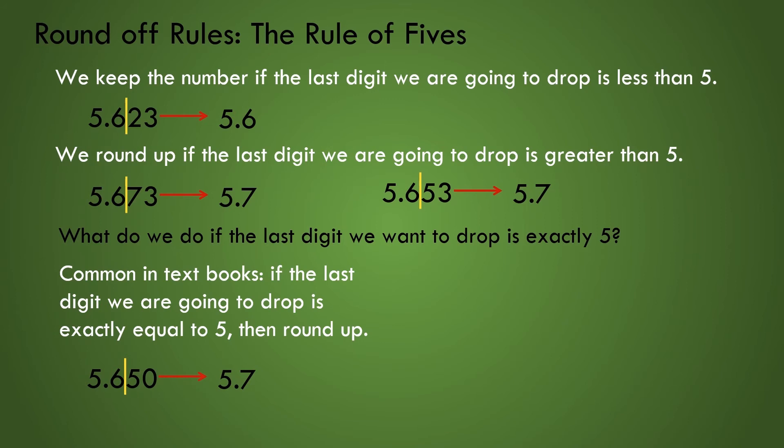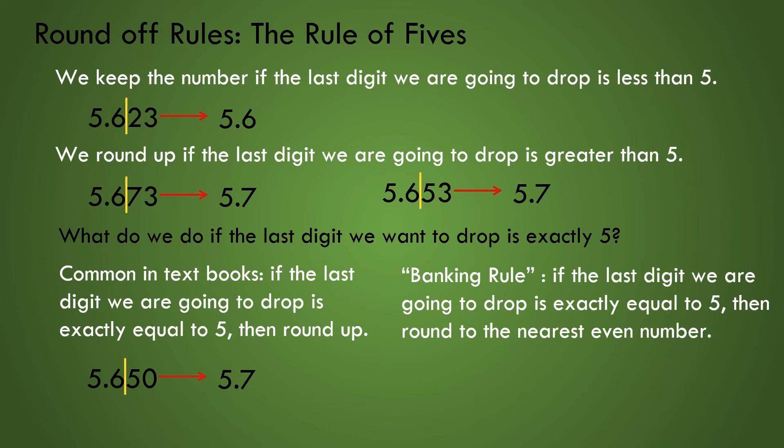For intense analytical work, many use a rounding rule for fives called the banking rule. If the last digit we're going to drop is exactly equal to five, then we round to the nearest even number every time. We're assuming that when rounding, 50% of the time we would get even values.